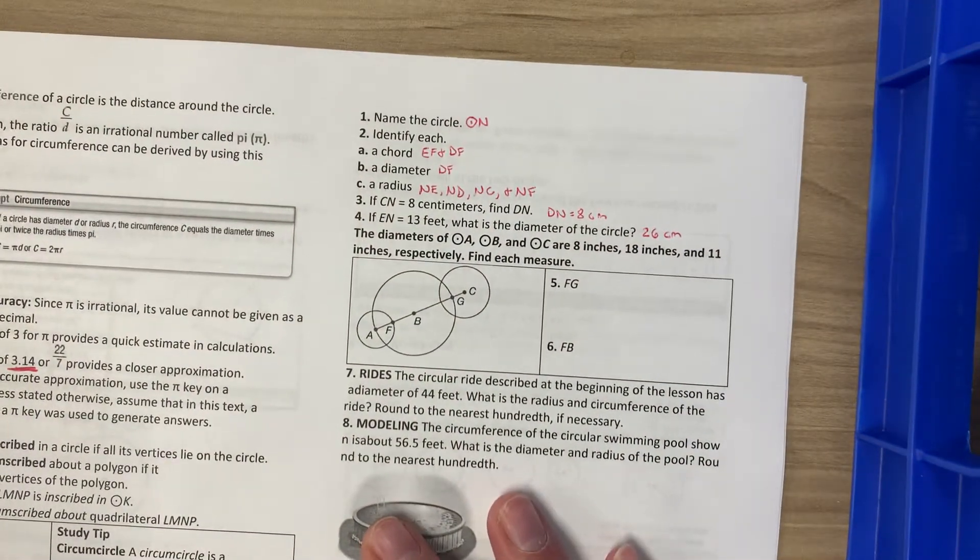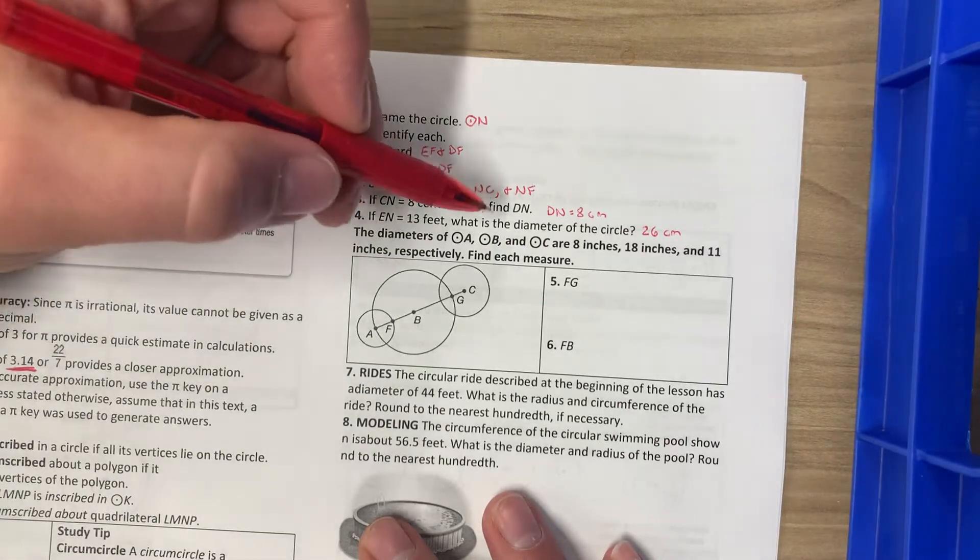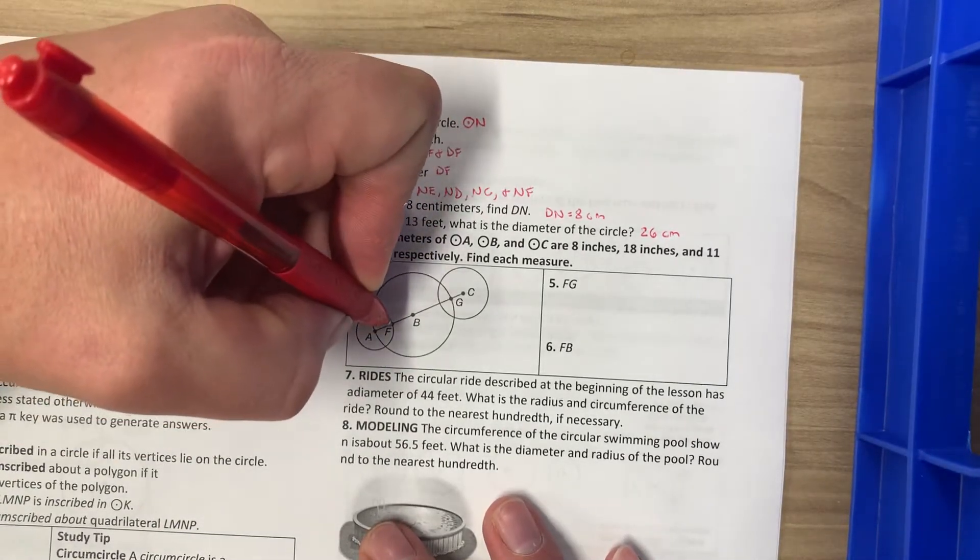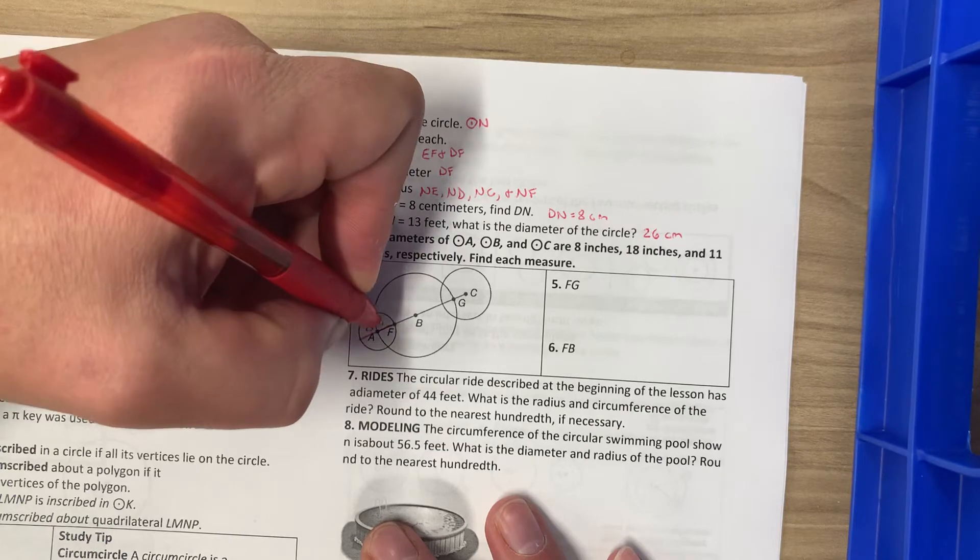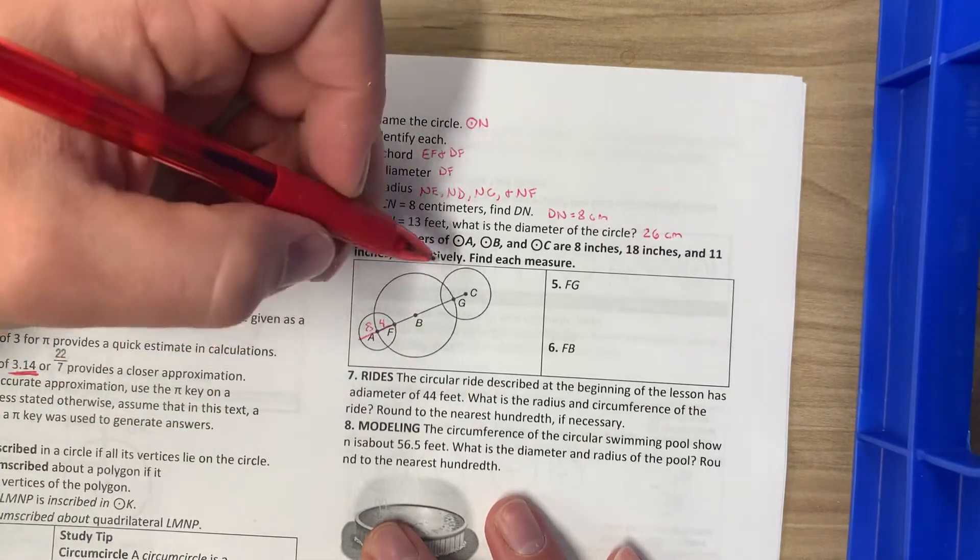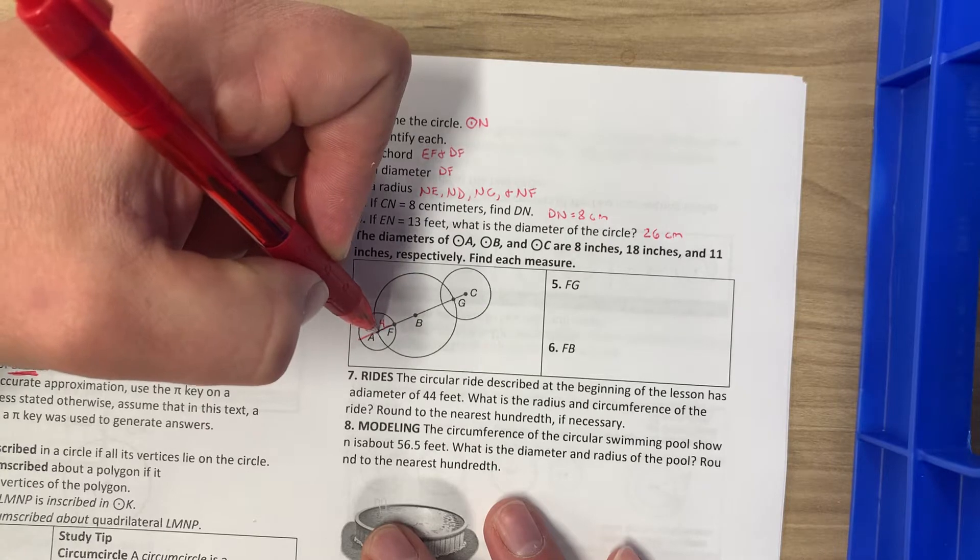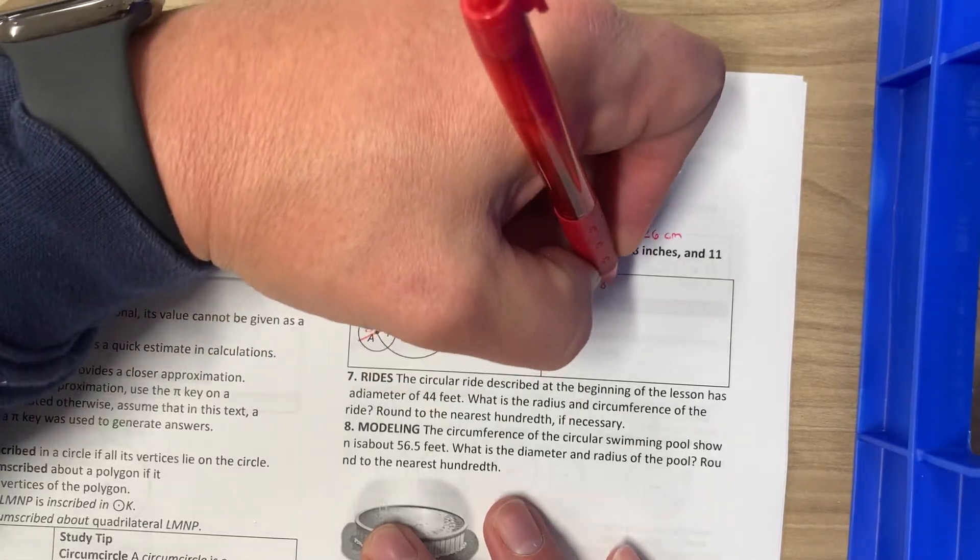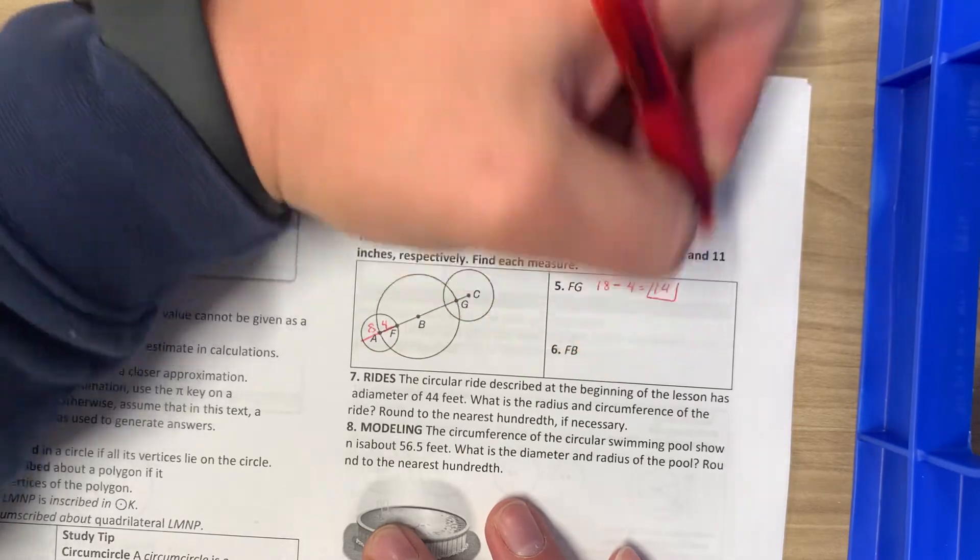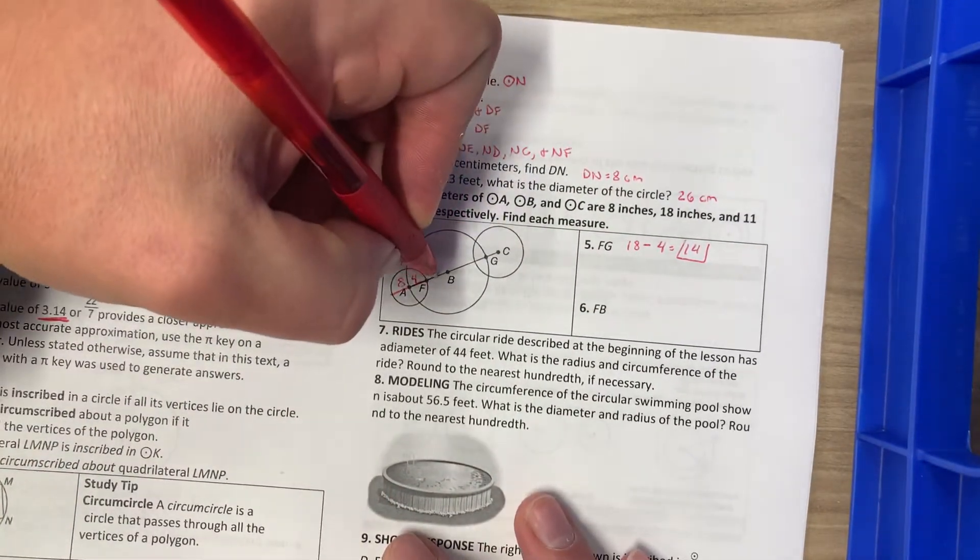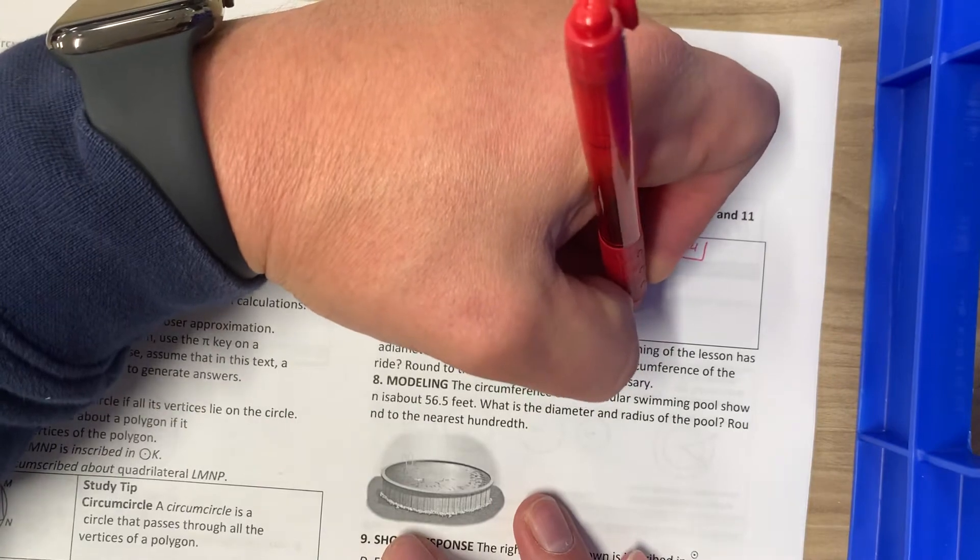The diameters of circles A, B, and C are 8, 18, and 11 inches respectively. Find each measure. If the diameter of circle A, this whole circle, is 8, that means this dot to this dot, the radius, is 4. Same thing would work on this circle as well. To find FG, we're going to do 18, the diameter of this whole big circle B, minus this radius 4, so we get 14. For FB, from here to here, we're just going to do the radius of the big circle B, which is 9, half of 18, minus 4.